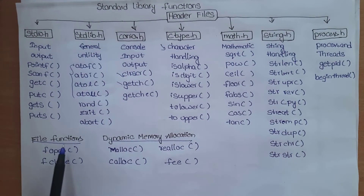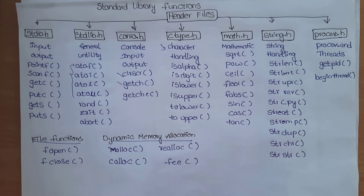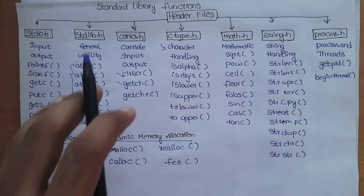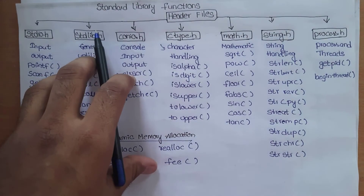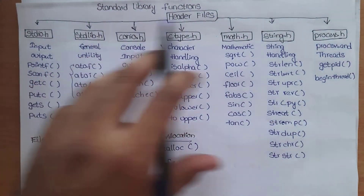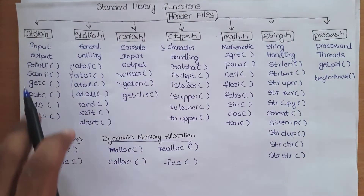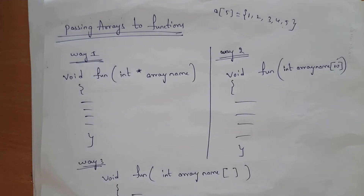fopen and fclose are file functions. malloc, calloc, and realloc are dynamic memory allocation functions. Whenever a standard library functions question comes in the exam, you need to write all of this. Next, I will explain passing arrays to functions.